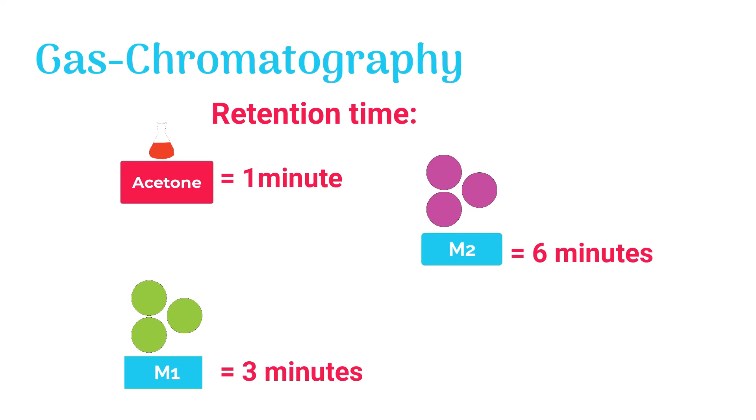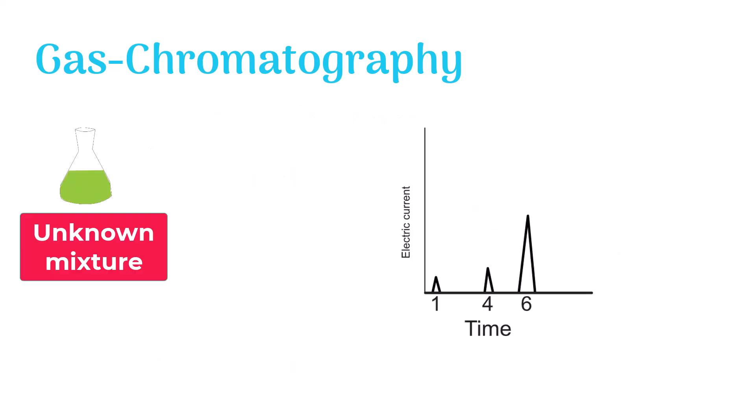Retention time is actually the time which a component of the sample consumes from its injection till escaping out of the column. In this chromatogram, the first peak appears at time 1 minute, the second peak appears at time 4 minutes and the third one appears after 6 minutes.